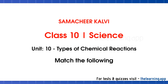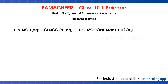Next is match the following. First: NH4OH plus CH3COOH gives CH3COONH4 plus H2O. CH3COOH is acetic acid, an acid. NH4OH is ammonium hydroxide, a base. These two react as acid and base, so this is a neutralization reaction.